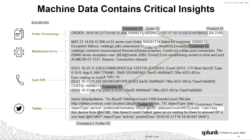They're getting frustrated, so what they end up doing is probably going to tweet about it: 'This company sucks, they don't know what they're doing.' So if we have a way to capture all that data in a system and correlate it — from the customer ID, the customer's Twitter handle, their IP address, and also the middleware error — not only can we capture in real time and correlate, but also alert that something bad is happening so it doesn't happen to the next customer. We can take action.